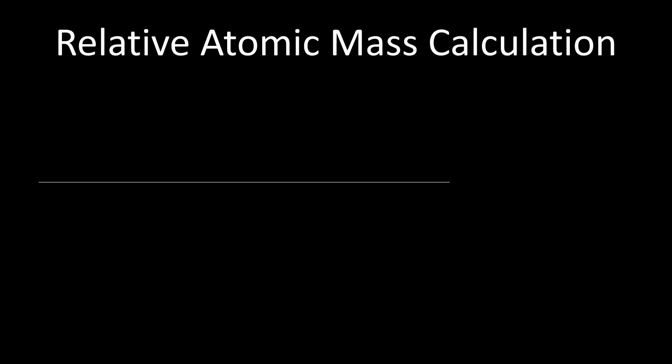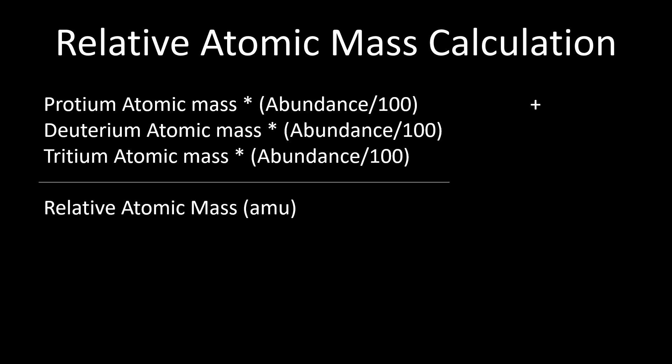To determine the relative mass, the atomic mass of each hydrogen isotope is multiplied by its abundance expressed as a fraction. Summing these products provides the relative atomic mass. This can be calculated using the following equation.